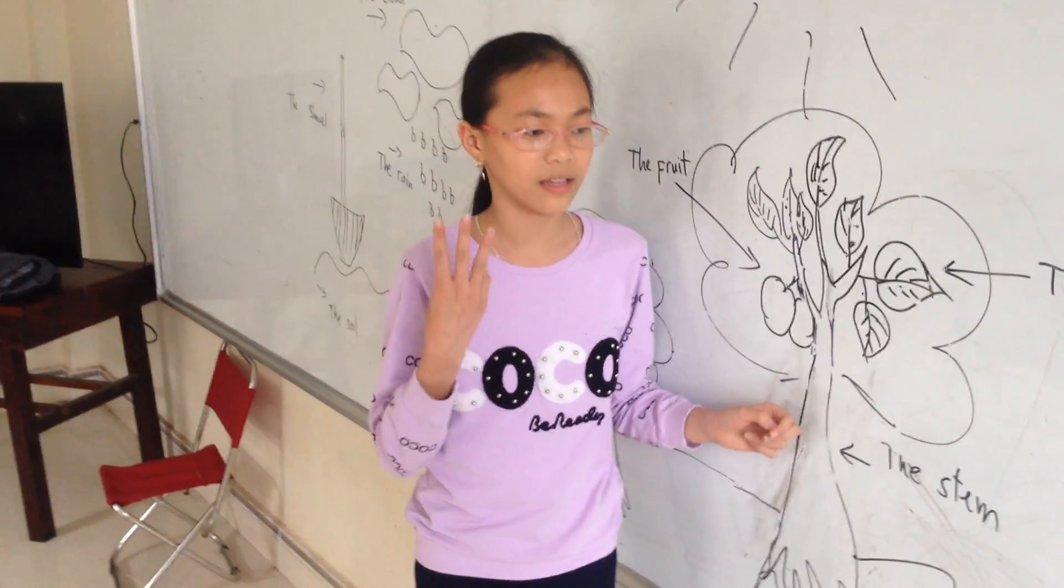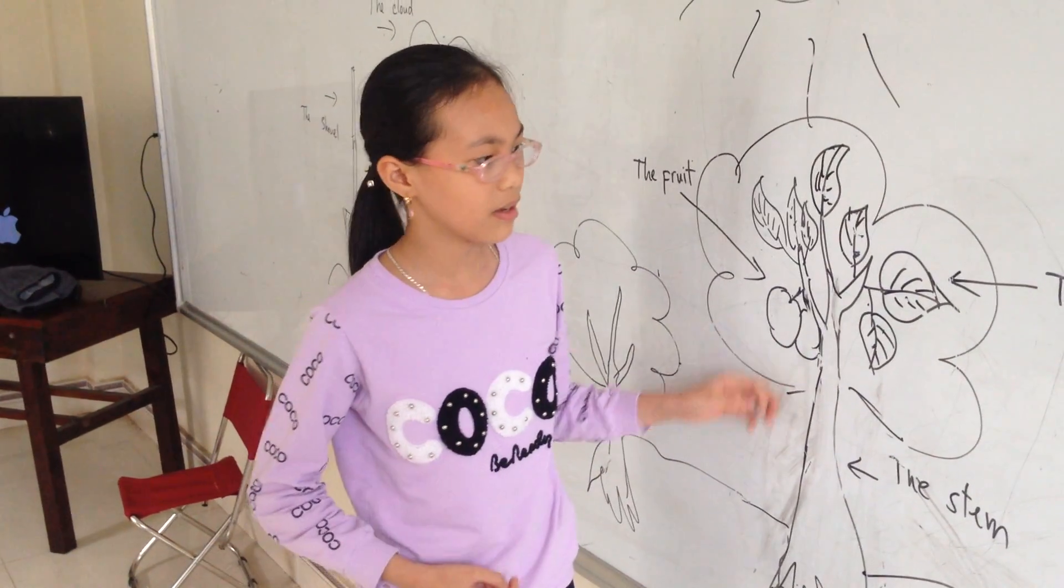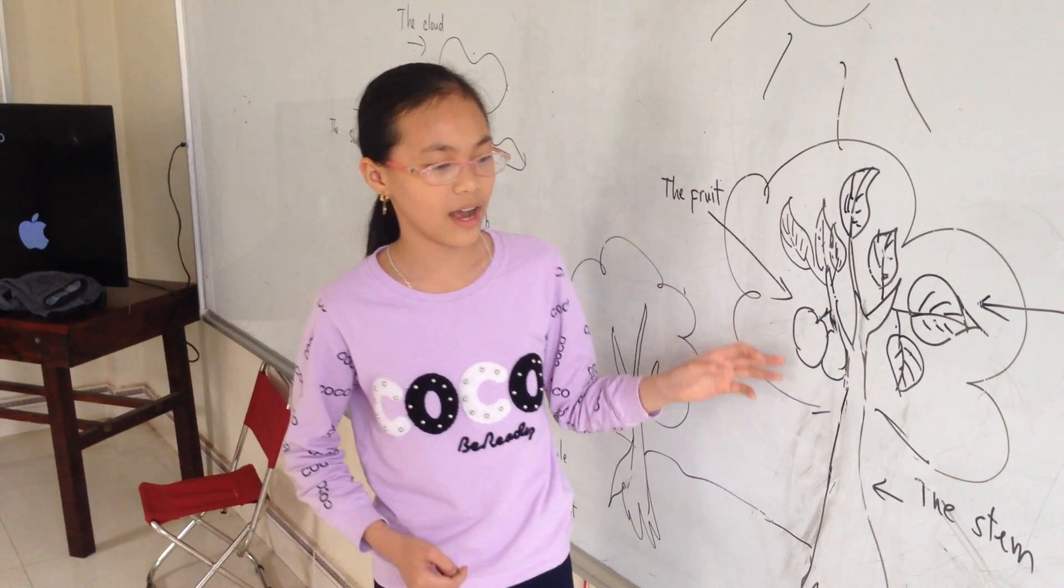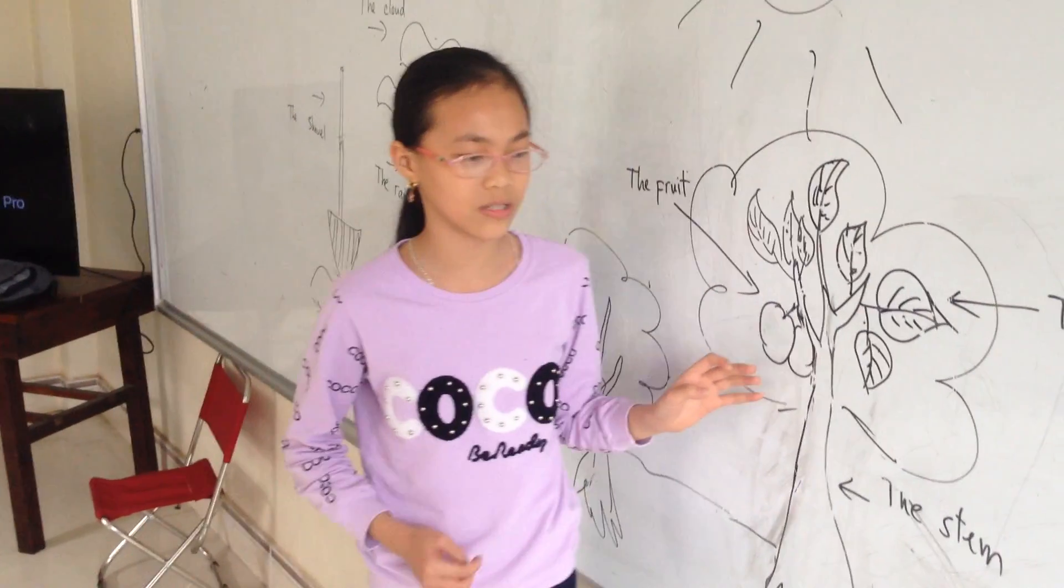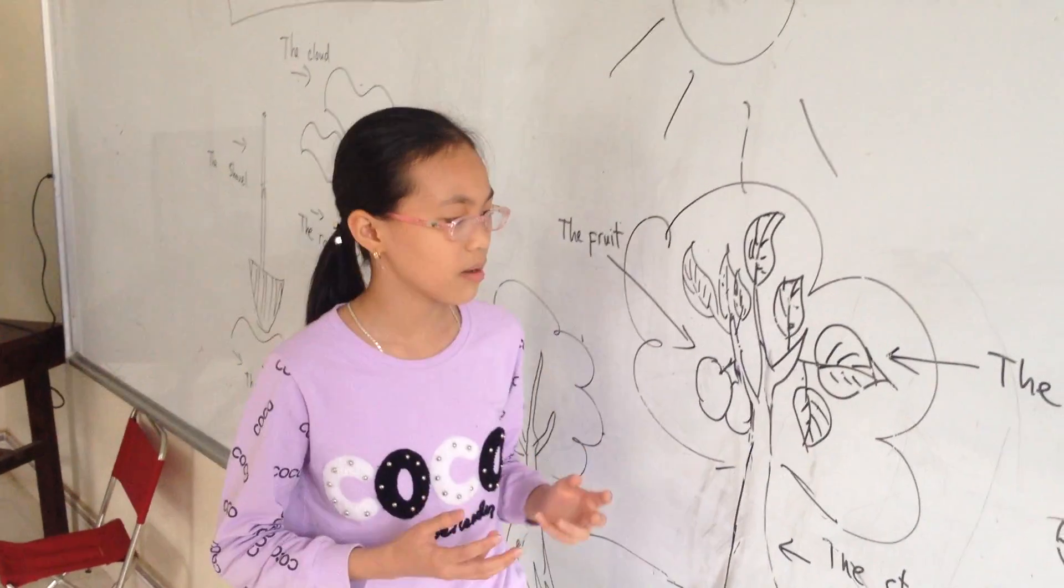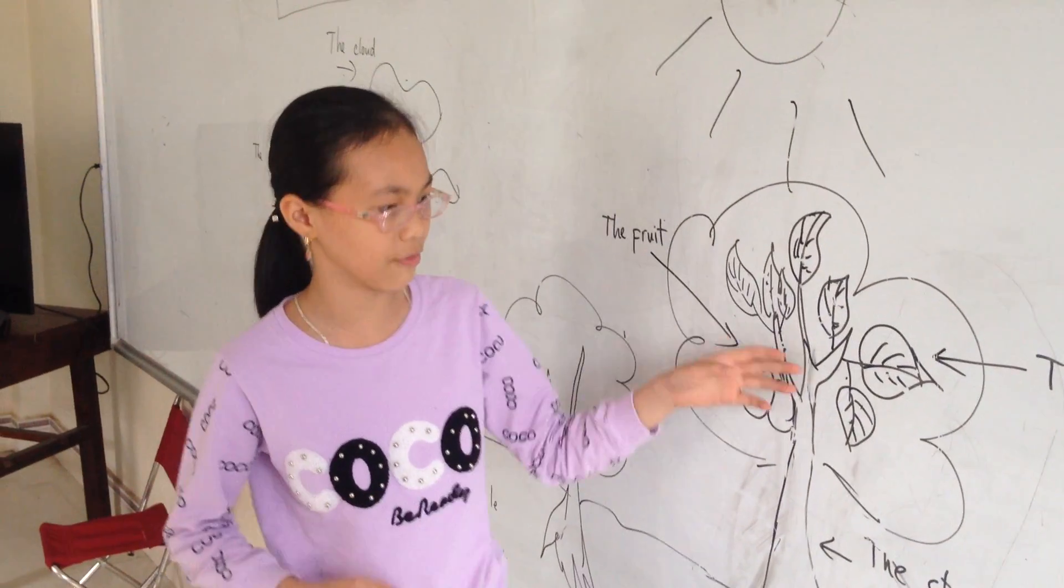The third part is the leaf. It makes food for the plant. The plant breathes by taking in air.